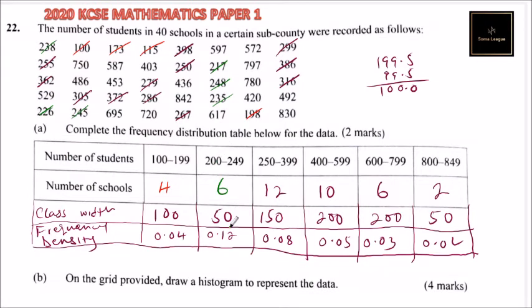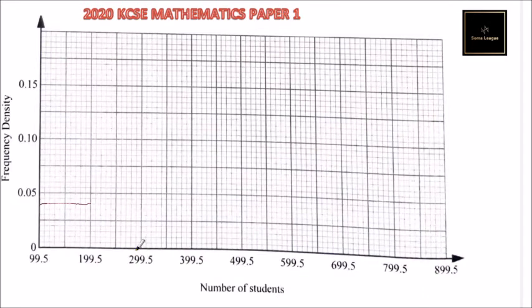Then the next one, between 200 and 249, it is 0.12. So you check here 0.12, and it is from up to here because it is 250. This is 0.11, 0.12, so you have your frequency density there.